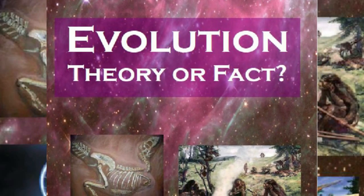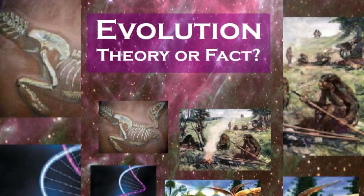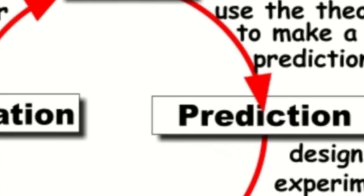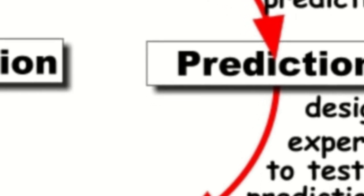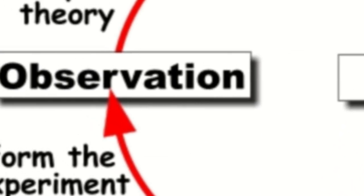Creationists often criticize evolution for being just a theory, not a fact. This criticism ignores the fact that right or wrong, a theory makes testable predictions. The strength of that theory is predicated upon whether or not those predictions are confirmed by scientific findings.